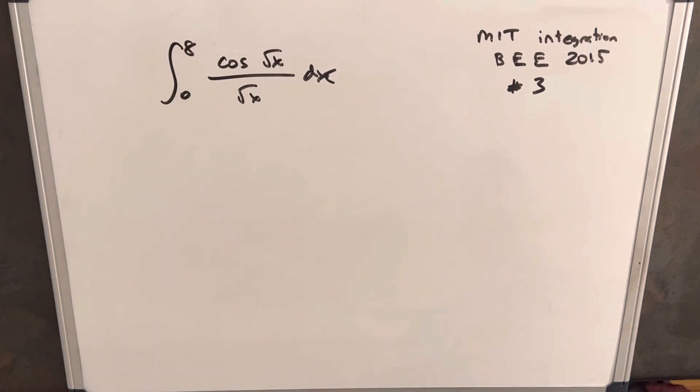We have on the board MIT Integration B 2015, problem number three. It's the definite integral from 8 to 0, cosine of square root x over square root x dx.